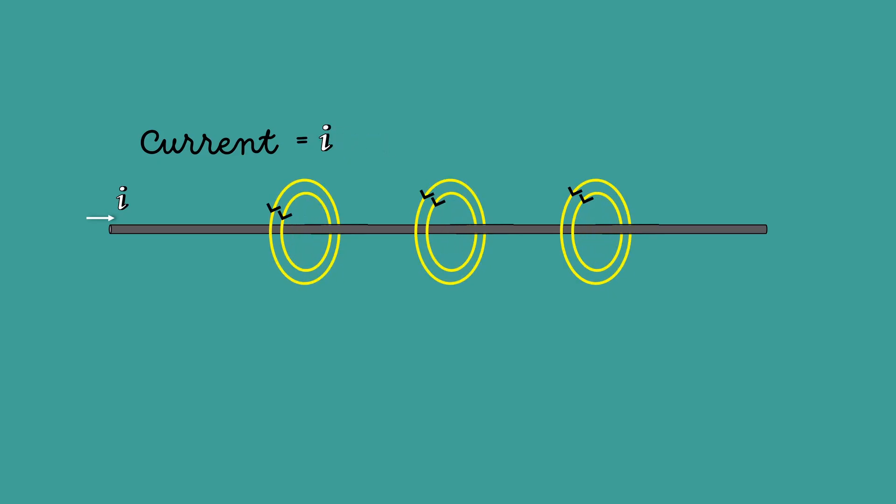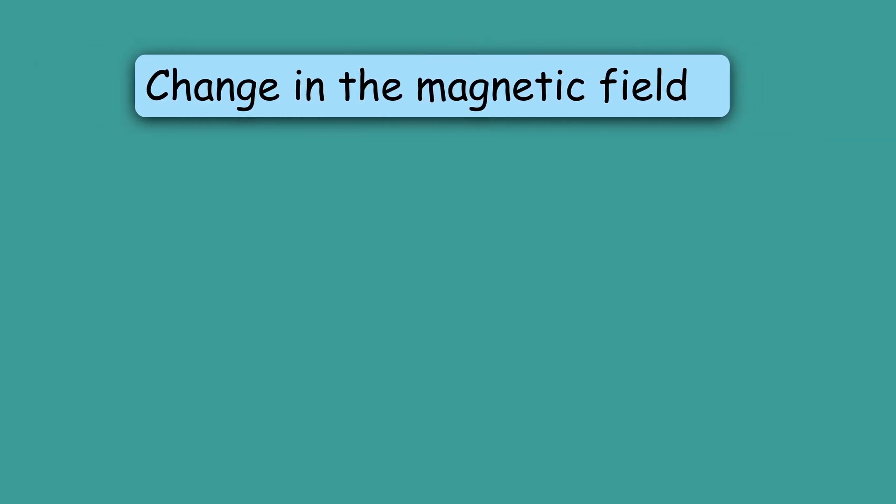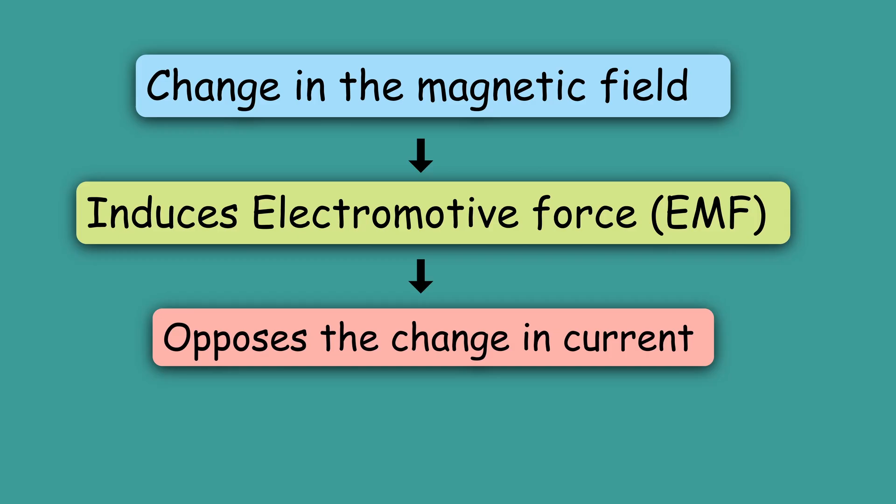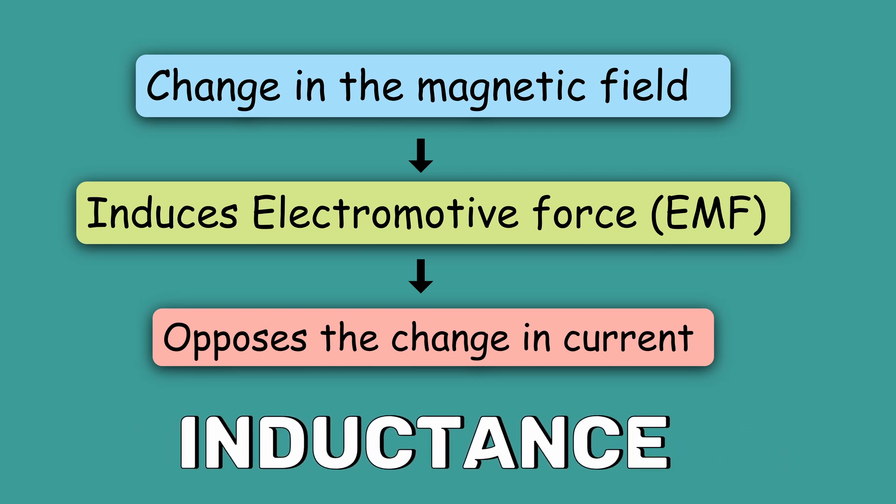From Faraday's law of induction, this change in magnetic field induces an electromotive force or voltage in the conductor. This induced voltage has the effect of opposing the change in current. This tendency of an electrical conductor to oppose a change in the electric current flowing through it is called inductance.